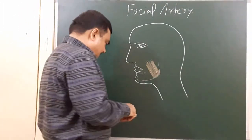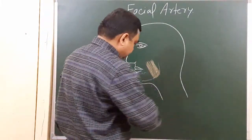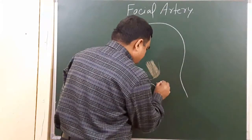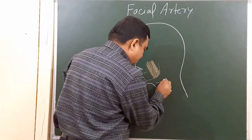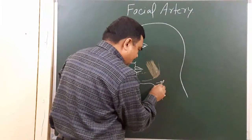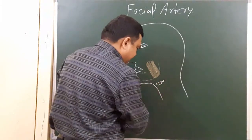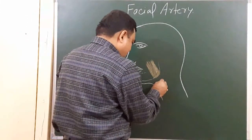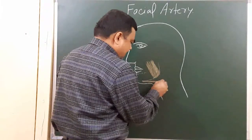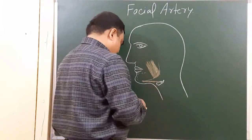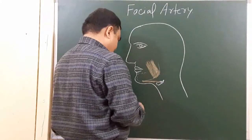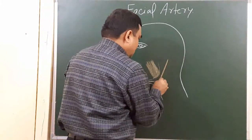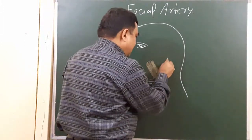Here is the position of the hyoid bone — this is the lesser cornu, the greater cornu, and this is the body of the hyoid bone. Here is one muscle: this is the anterior belly of the digastric, and here lies the posterior belly of the digastric.